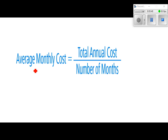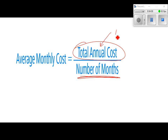For your average monthly cost, you total up the annual cost and divide by 12 months. The first half of the assignment gives everything in monthly cost. If it's an annual cost, you take the total and divide it by 12.